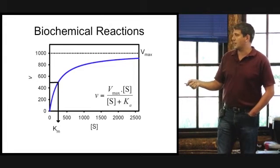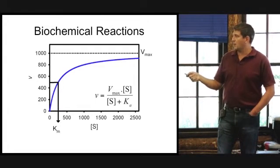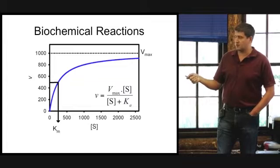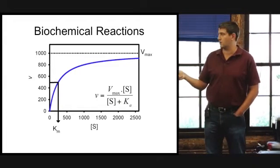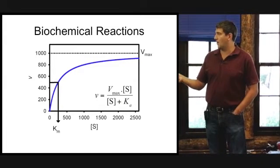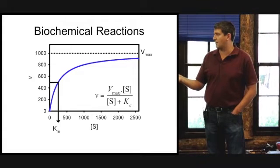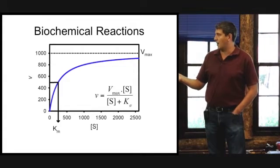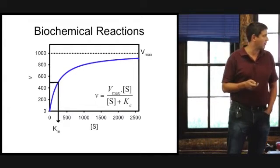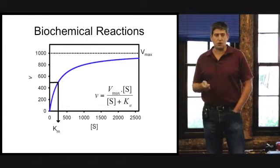And then you have this term, the KM, which is the Michaelis constant. If you take one half of Vmax, and in this cartoon diagram I just made Vmax 1000, so you take a velocity, a reaction rate of 500, and you just go ahead and extrapolate to what substrate concentration do you need in order to be at one half of your maximum velocity. Well, that's going to give you your Michaelis constant.